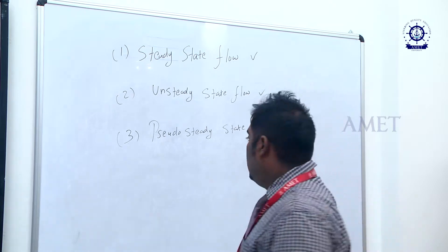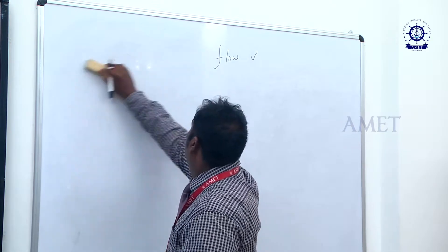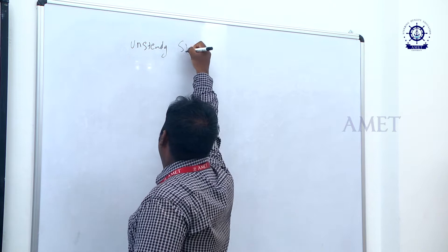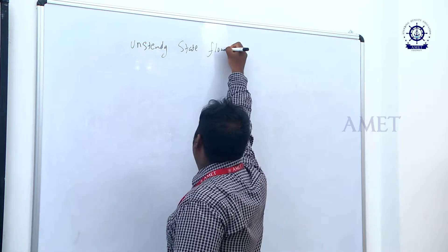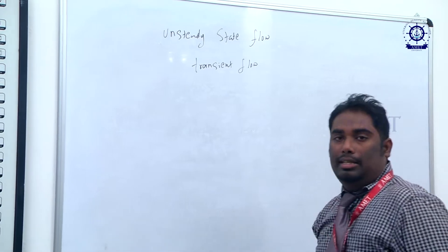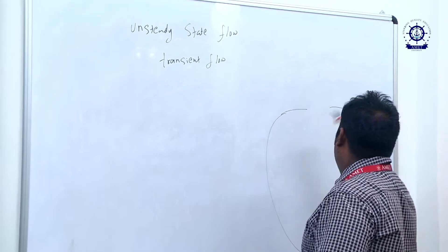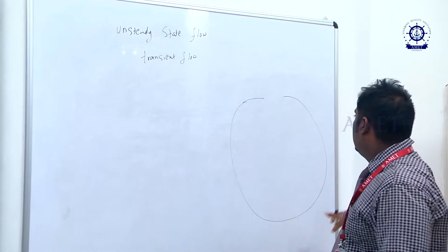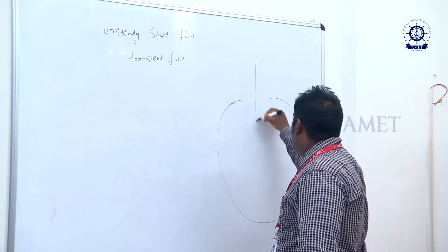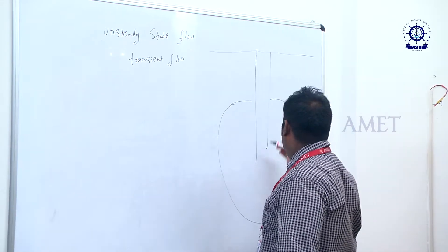We will discuss what is unsteady state flow, which also has another name: transient flow. Let us consider our reservoir to be circular — I am making an ideal reservoir. Then you have drilled a well vertically from subsurface to surface, from the surface down to reach the reservoir.